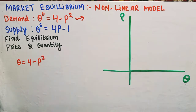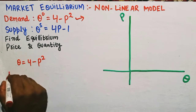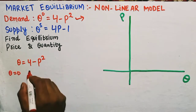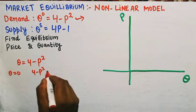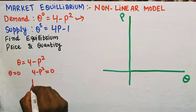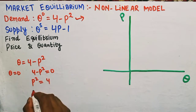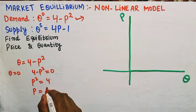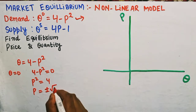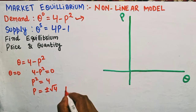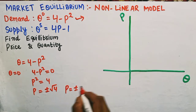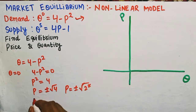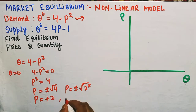To find the coordinates, let us put Q = 0. If Q = 0, then 4 - P² = 0, which gives P² = 4. Taking the square root, we get P = ±√4, so P = ±2.